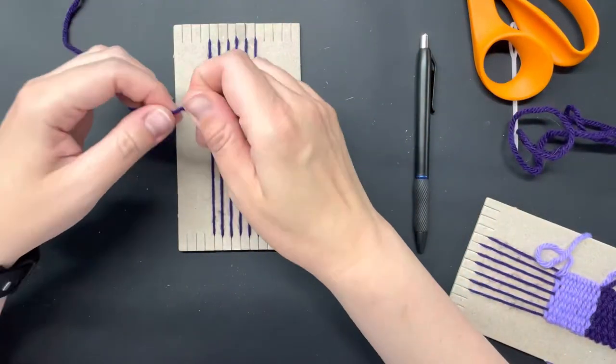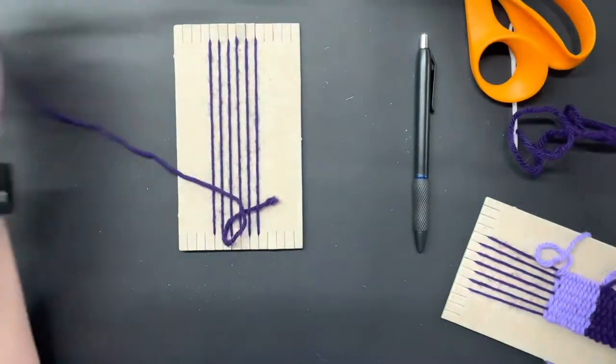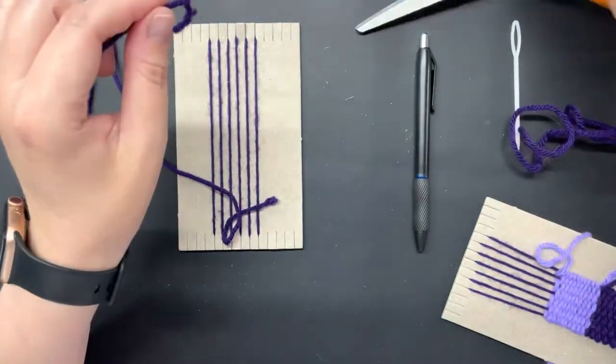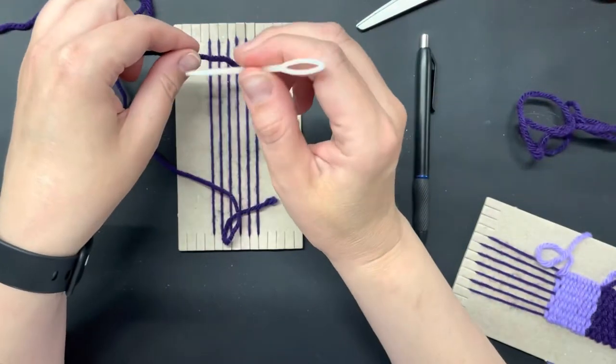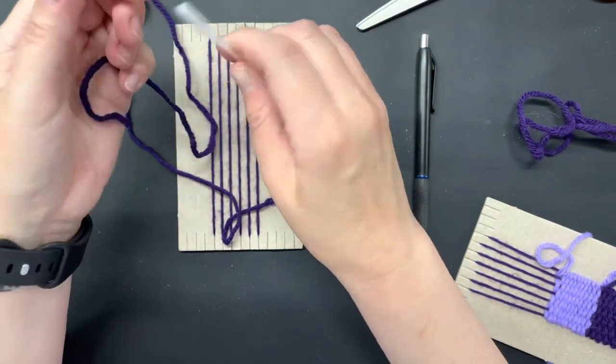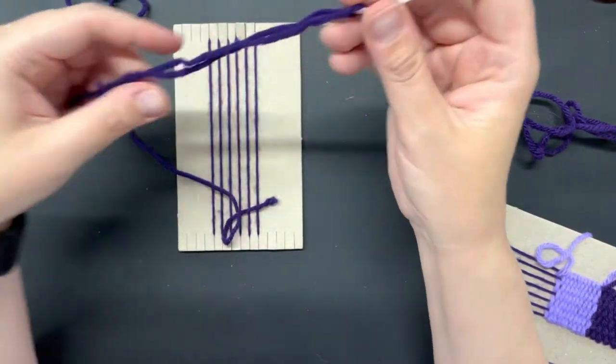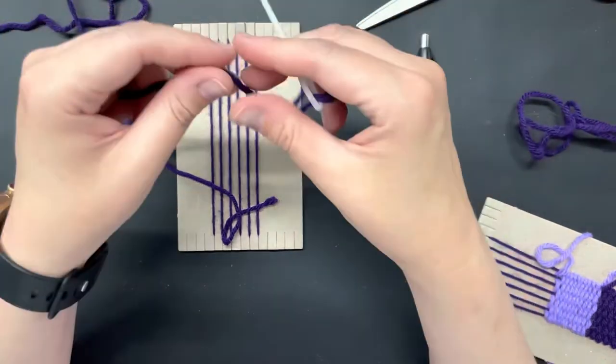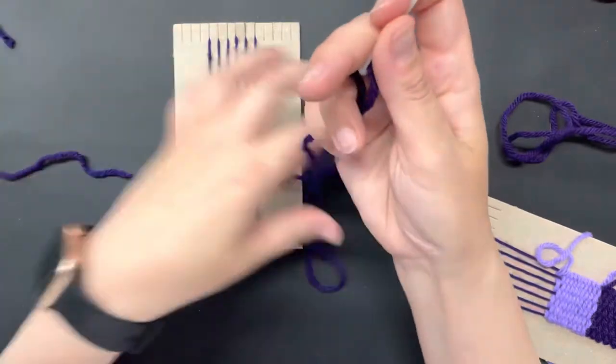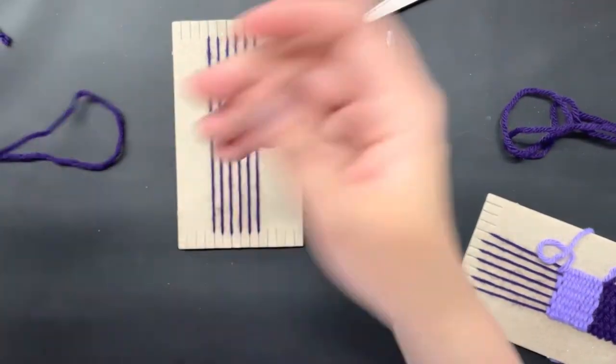Next up is starting to weave. So again I'm just going to use this dark purple color and just pull off a couple feet, cut that free, and use my yarn needle as a nice wide eye opening, making it easy to thread through. I'm just going to leave another little tail. There's no knotting or anything like that involved in this project, and we can just start weaving.